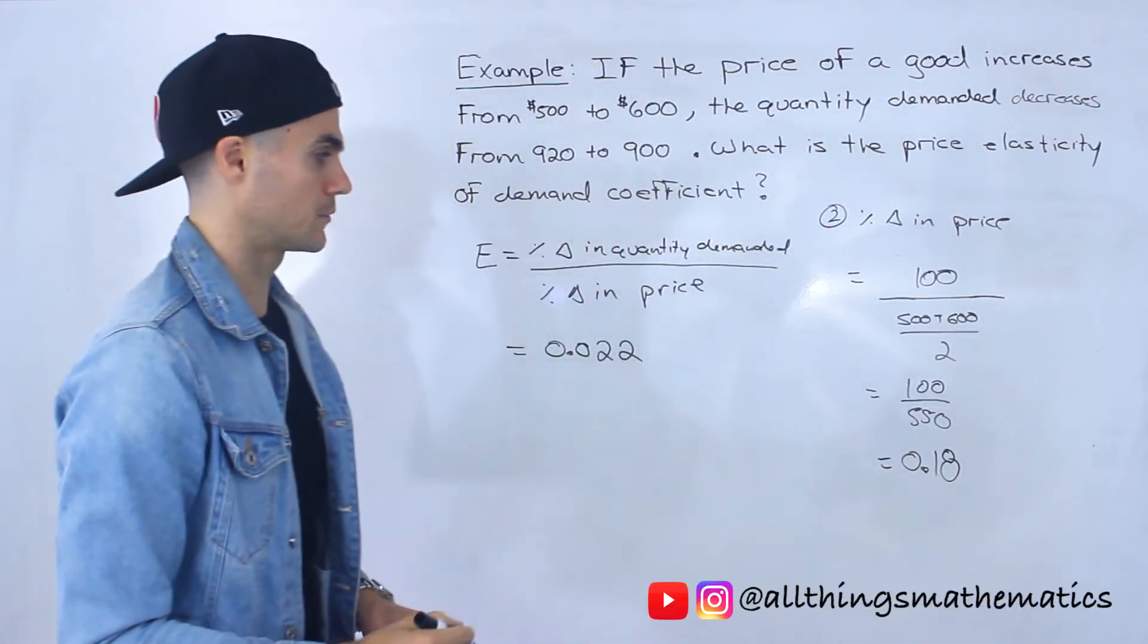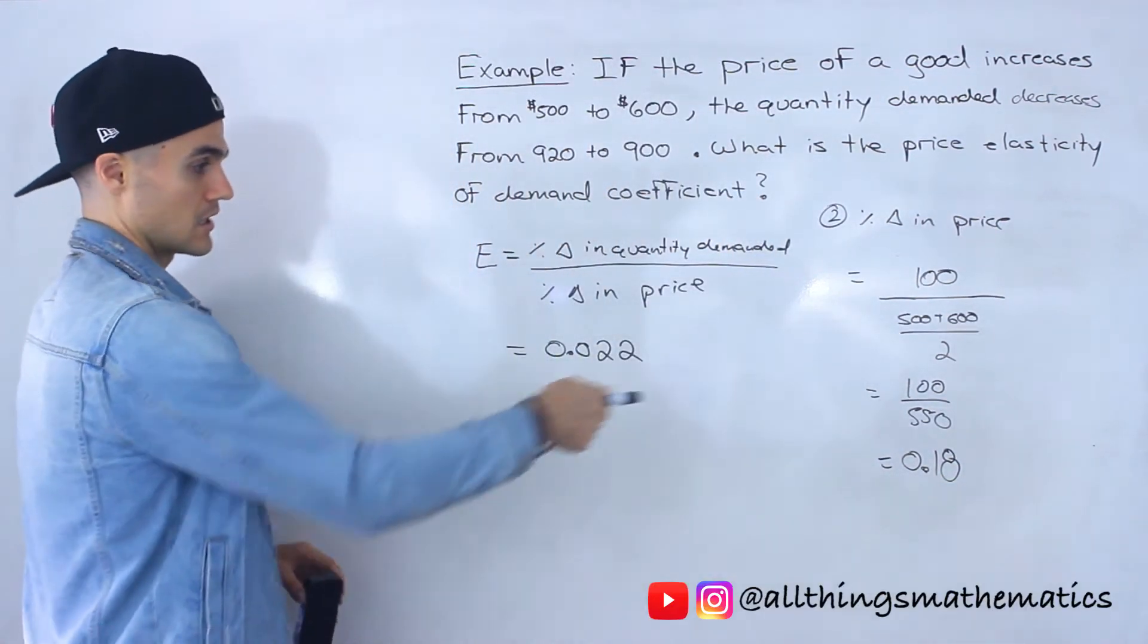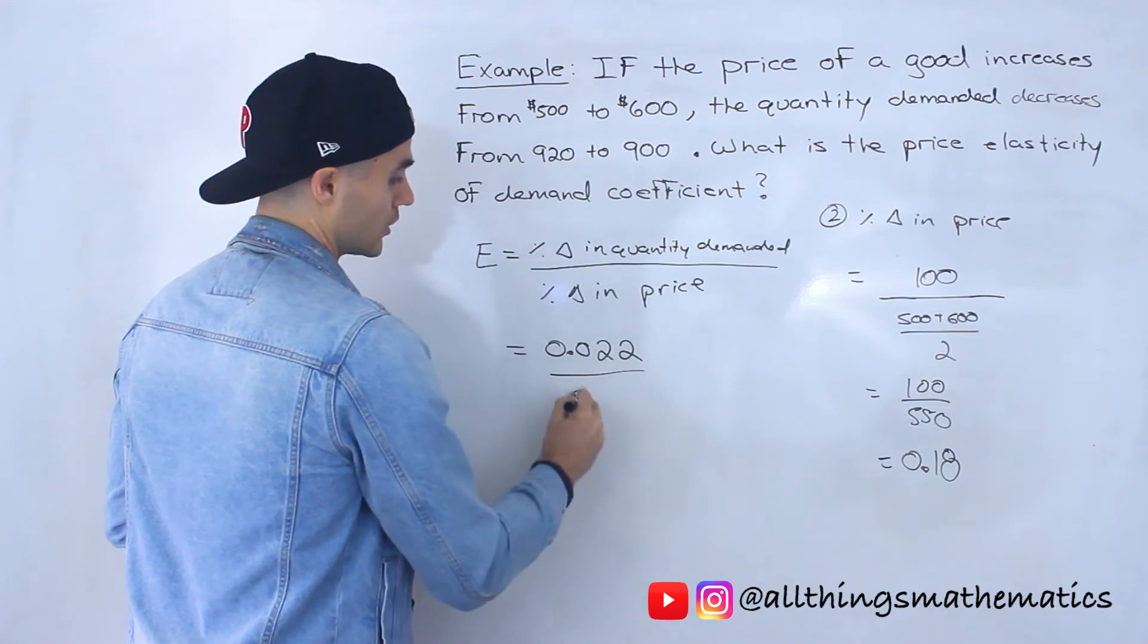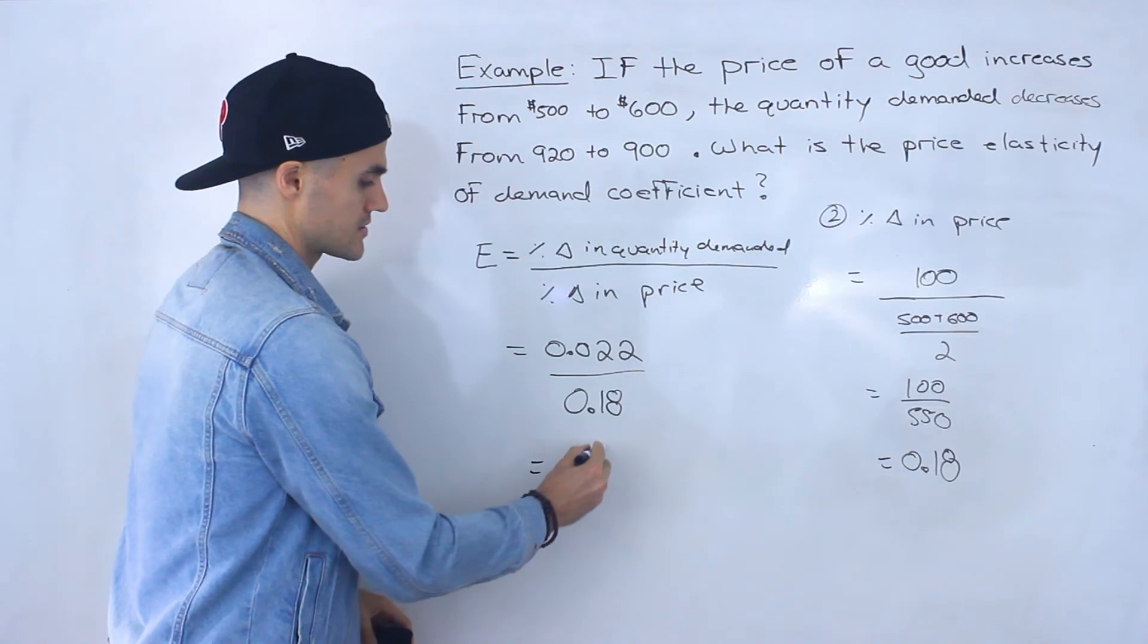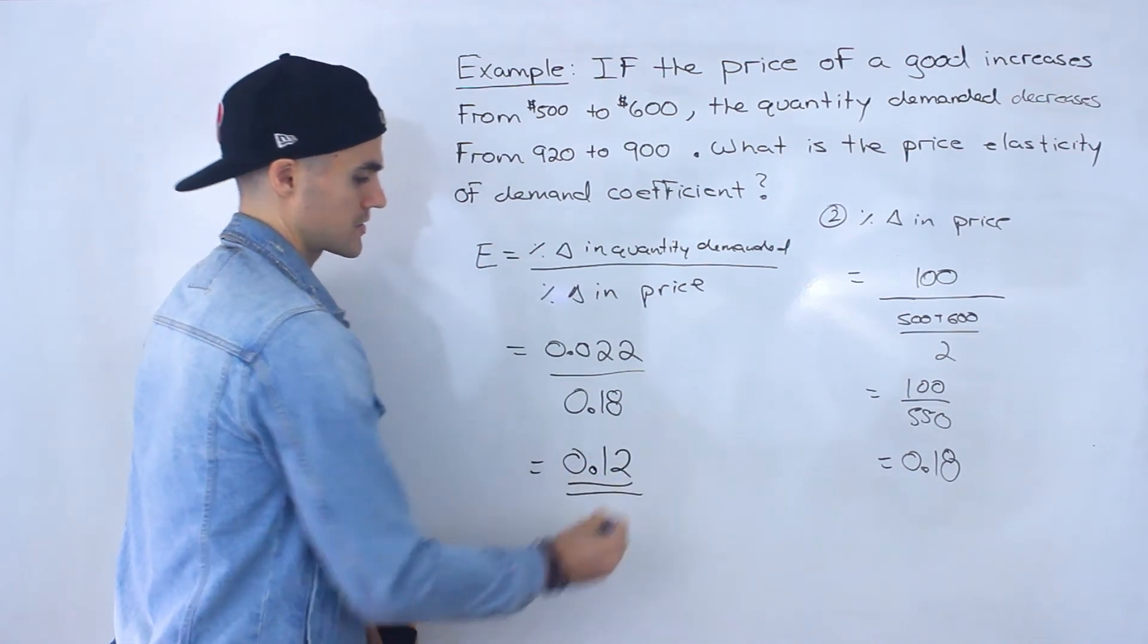So we would get $100 over $550, which would be approximately 0.18. When you do it in your calculator, I'm going to round it to two decimal places. So that would go over here. And when you do this calculation, you'd end up getting 0.12 approximately.